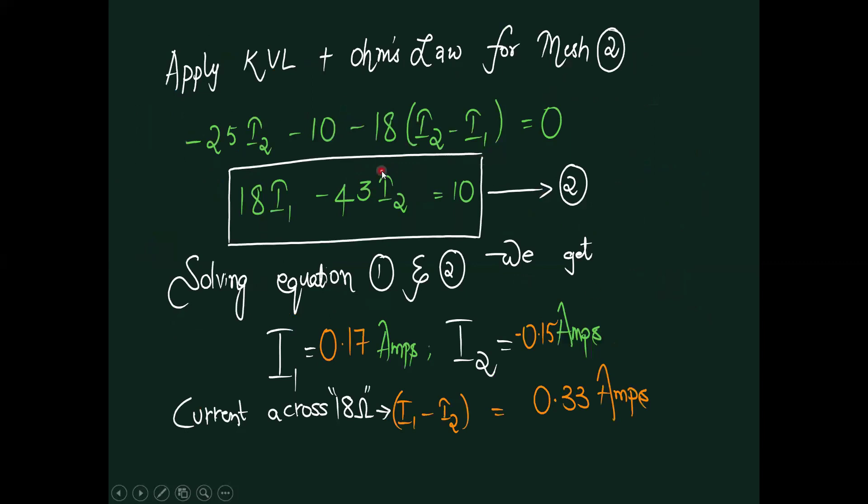In a similar fashion, try to apply Ohm's law for mesh number two. Same thing: minus 25 I2, and the voltage is minus 10, and this is minus 18 into—while referring to mesh two, this I2 current is greater than I1—the difference of this current is I2 minus I1, equal to zero. Segregate those things, and this is equation number two. Solving those two equations, we get the values of I1 current approximately 0.17 amperes, I2 current 0.15 amperes magnitude. The minus is the direction of current flow is opposite to our convention. Current across 18 ohms is the difference of these two currents, I1 minus I2, approximately 0.33 amperes when both these sources are in activation mode.